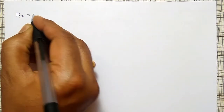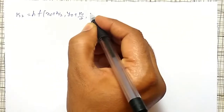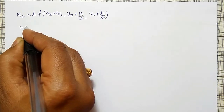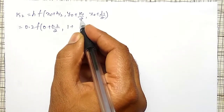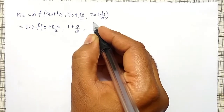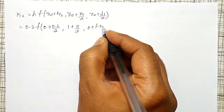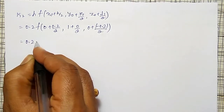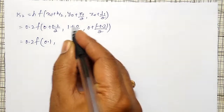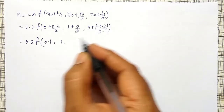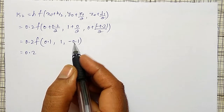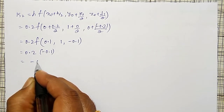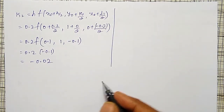Now k2 = h · f(x₀ + h/2, y₀ + k1/2, z₀ + l1/2) = 0.2 · f(0.1, 1 + 0/2, 0 + (−0.2)/2) = 0.2 · f(0.1, 1, −0.1). Since f(x, y, z) = z, we get 0.2 × (−0.1) = −0.02. So k2 = −0.02.